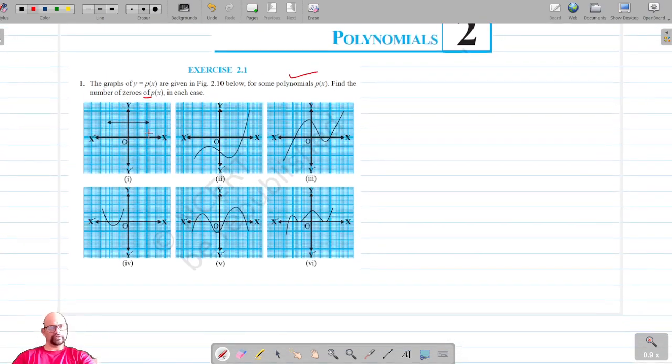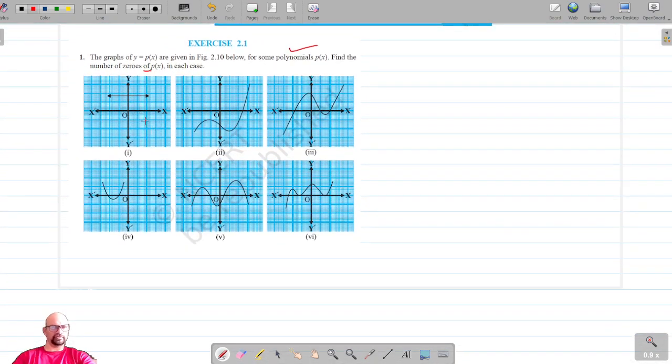Before we start, we know that the geometrical meaning of zeros is that if the graph intersects the x-axis, then we have the zeros of that polynomial. In this case, the graph of the polynomial is this line which is parallel to the x-axis.